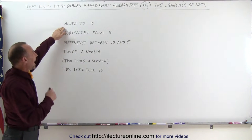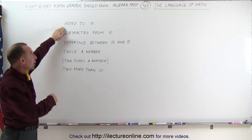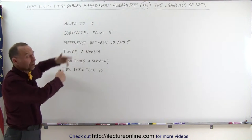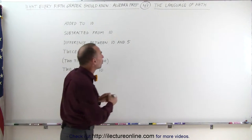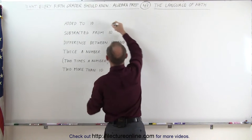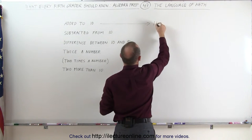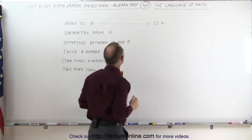When we see something that says added to a number, it could be an unknown number or a known number, let's say the number 10. How do you write that? Well, added to means you're going to add something to that number, therefore you write 10 plus whatever you're adding to that.